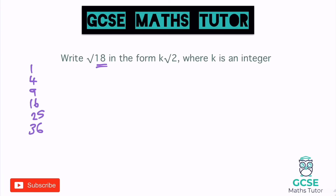Looking at which of these square numbers goes into 18 — hopefully you can see that 9 goes into 18. So I can write the square root of 18 as the square root of 9 multiplied by the square root of 2. The square root of 9 is the whole number 3, so it's 3 lots of, or 3 times, the square root of 2.